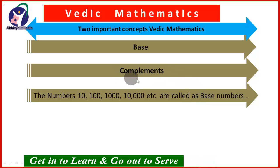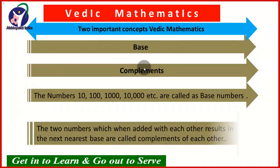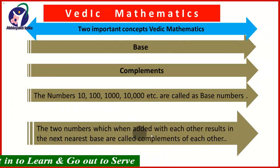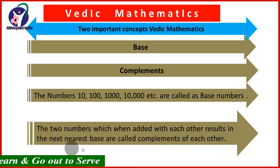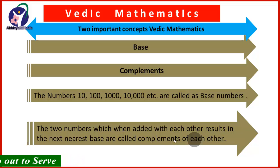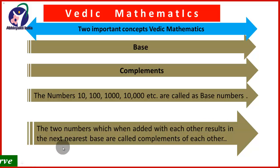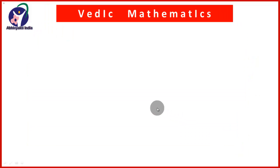The second concept is complements. The two numbers which, when added with each other, result in the next nearest base are called as the complements of each other. It means whenever we add two numbers and the result is the next nearest base, then such two numbers are called as the complements of each other. Let us take examples to understand the concept of complements.